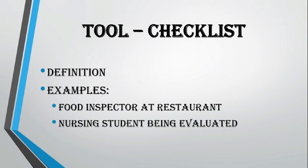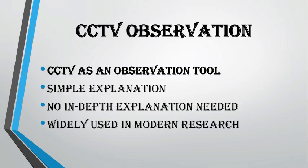A checklist is another commonly used observation tool. As the name suggests, it involves a prepared list of specific items or actions that need to be checked for their presence or absence. For example, a food inspector visiting a restaurant might use a checklist to evaluate factors such as purity of water, quality of food, behavior of staff, availability of electricity, proper ventilation, and drainage system. For each item, the inspector checks yes or no depending on whether the condition is met. This structured approach helps in making consistent and systematic evaluations.